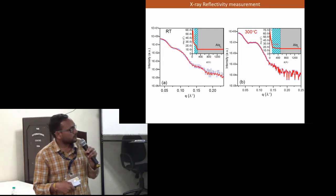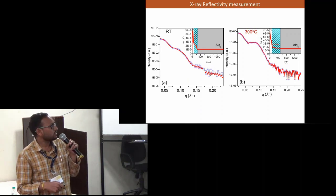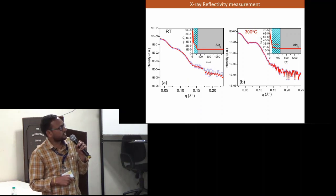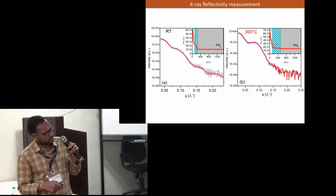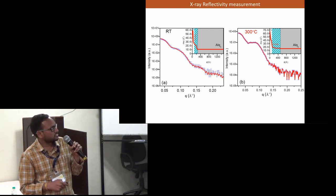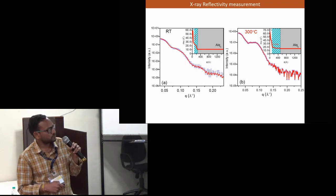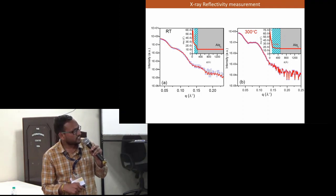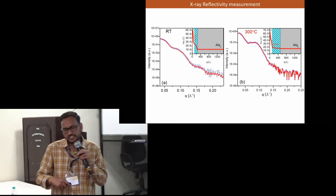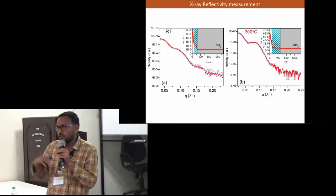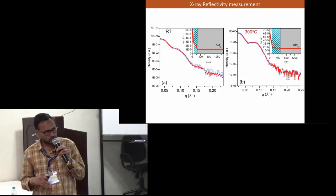This is further confirmed by the in situ XRR measurement done in our same chamber. The XRR at room temperature and 300 degrees Celsius shows this electron density profile. Here we see that the blue curves show that this portion is the diffused part of Fe into the Alq3. At 300 degrees Celsius this portion is increased, so it clearly signifies that at higher temperature my Fe atoms go deeper and deeper into the polymer.